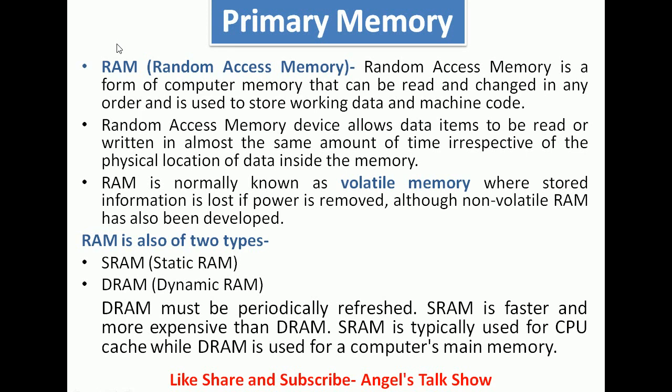The first type of primary memory is RAM — Random Access Memory. Random Access Memory is a form of computer memory that can be read and changed in any order, and is used to store working data and machine code. A RAM device allows data items to be read or written in almost the same amount of time irrespective of the physical location of data inside the memory.